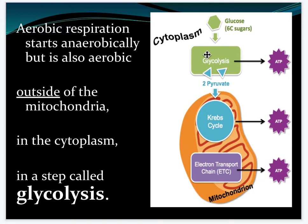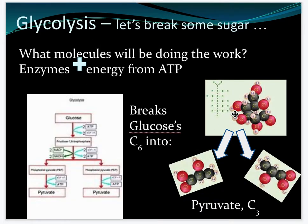Moving on: the molecule doing the work is enzymes with energy from ATP, and what it's specifically breaking is glucose into two pyruvates, which are C3 molecules — they each have three carbons. So the original glucose had six carbons and it broke into two sets of three carbons.